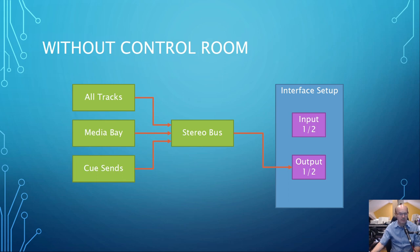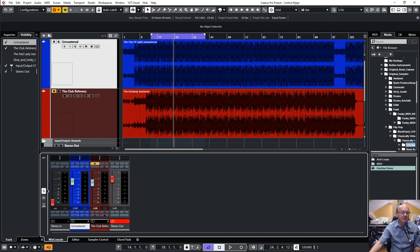The problem is that everything is going through the stereo bus, and if you have any effects or any processing in the stereo bus it will affect the sound that you hear — also from the media bay. This is the setup in Cubase without the control room.